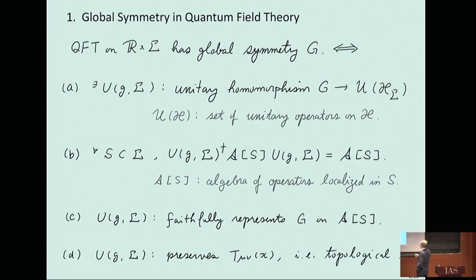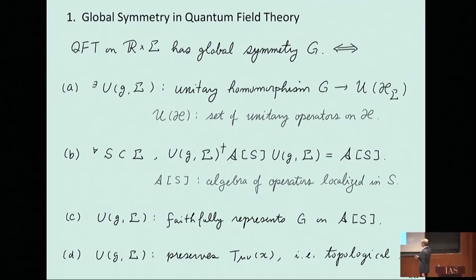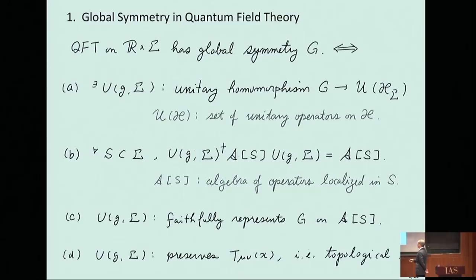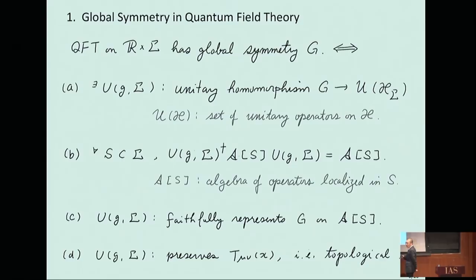The other condition is that this symmetry is realized on the algebra of operators localized in S, including things like Wilson loops when the entire loop is included in the region. This is a statement that the symmetry acts locally on local operators. For the global symmetry G to make sense, this unitary homomorphism should faithfully represent the group: for every element of G, there is at least one element of this algebra on which it acts non-trivially. And of course this symmetry should be conserved—it commutes with the energy-momentum tensor, so it is one of those topological defects.